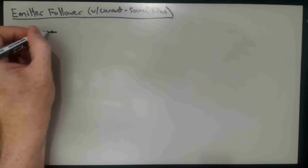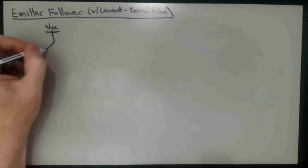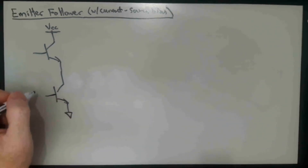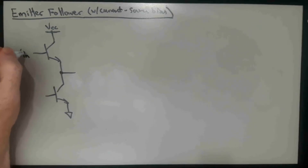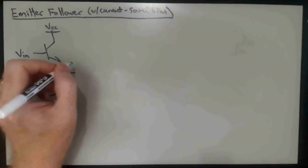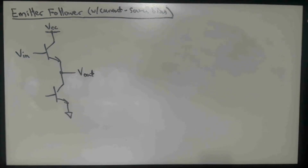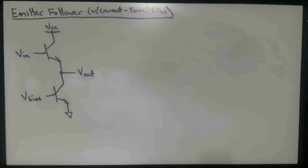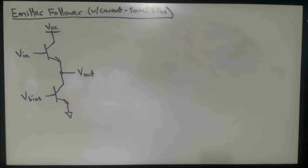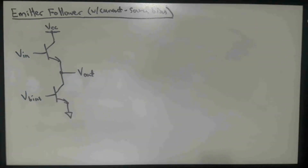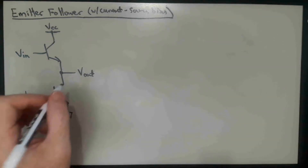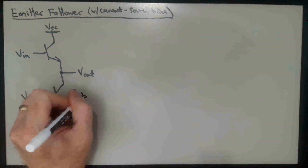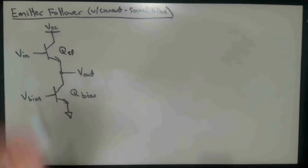The circuit looks like this. We have two transistors. V_CC is on the collector of the top transistor. We have a second transistor on the bottom with an emitter connected to ground. Here we put the input voltage on the base of the top transistor. The output voltage is at the emitter of the top transistor and the collector of the bottom transistor. The voltage on the base of the bottom transistor is established and called V_bias — just a constant. We call these transistors Q_bias and Q_EF for the emitter follower transistor.